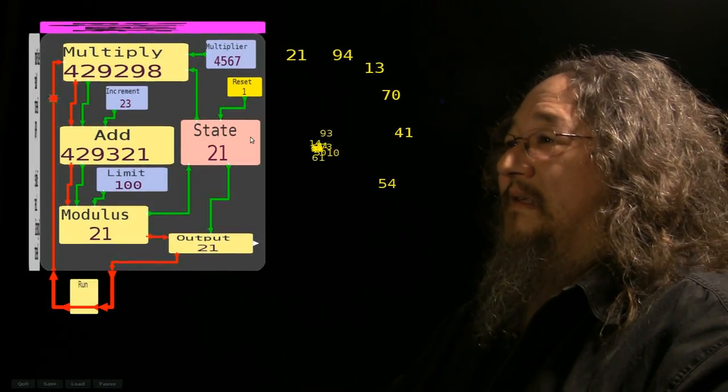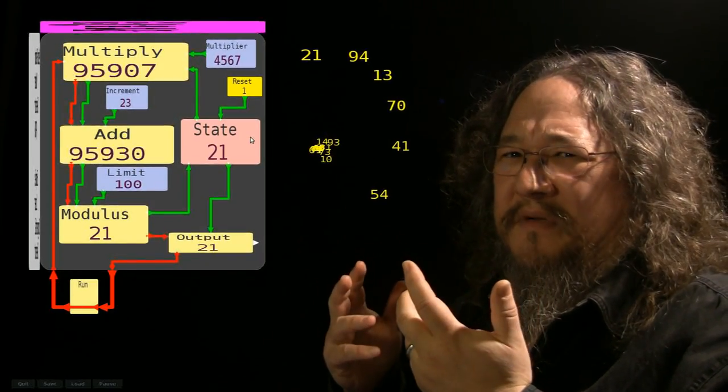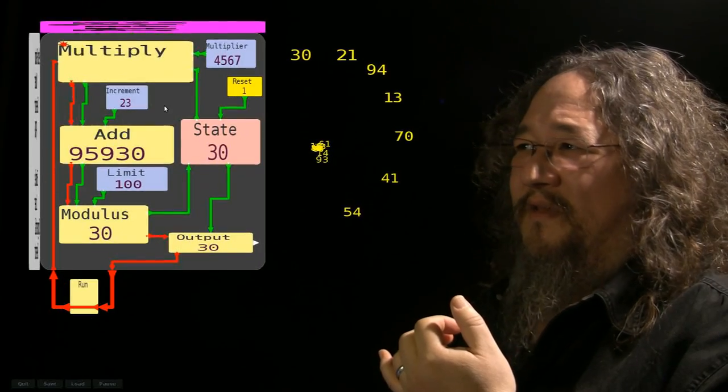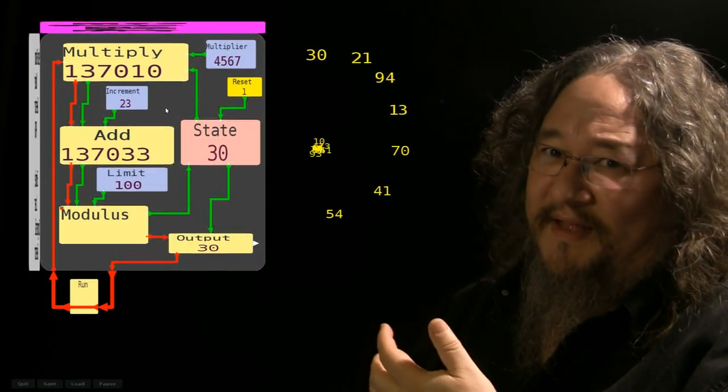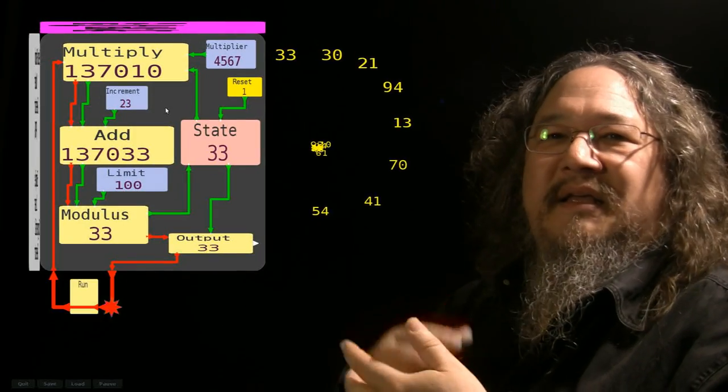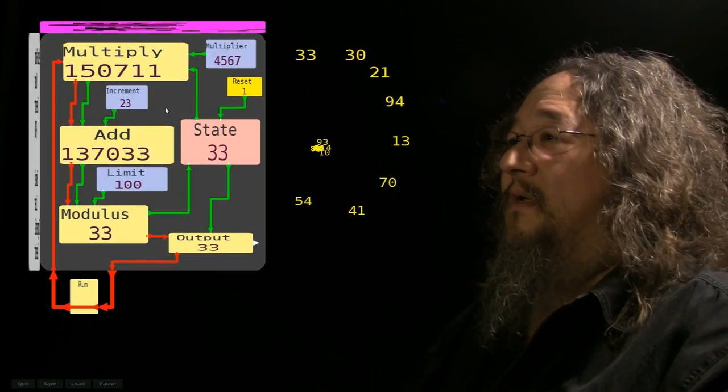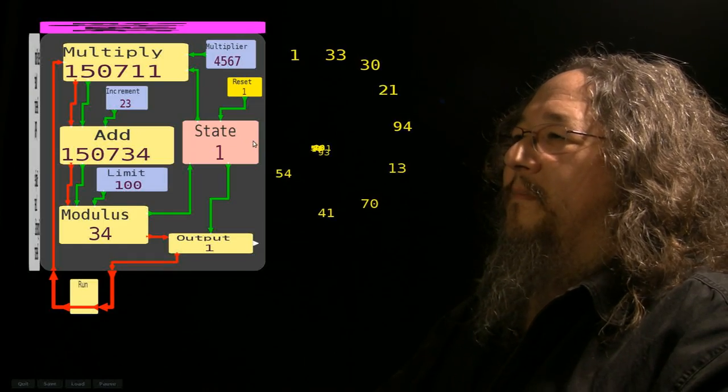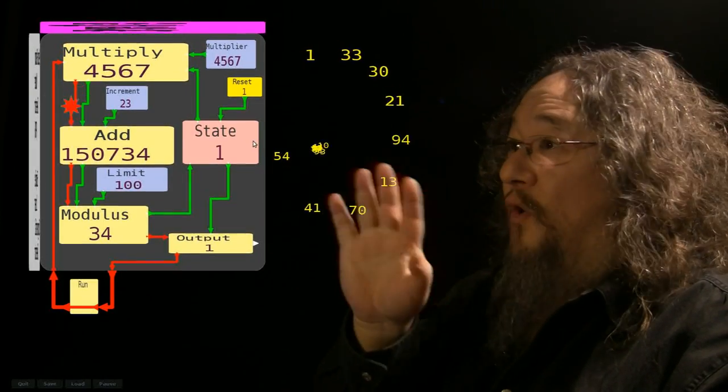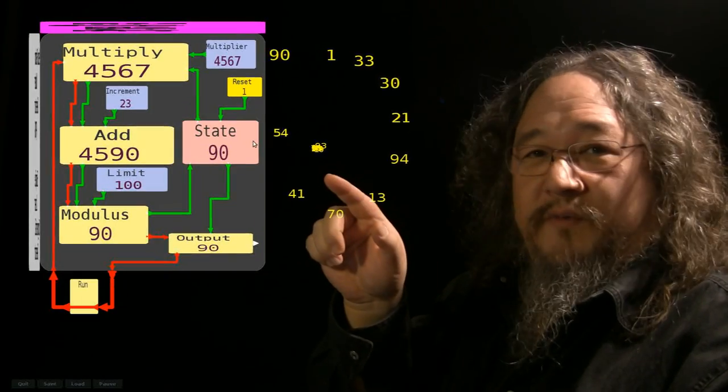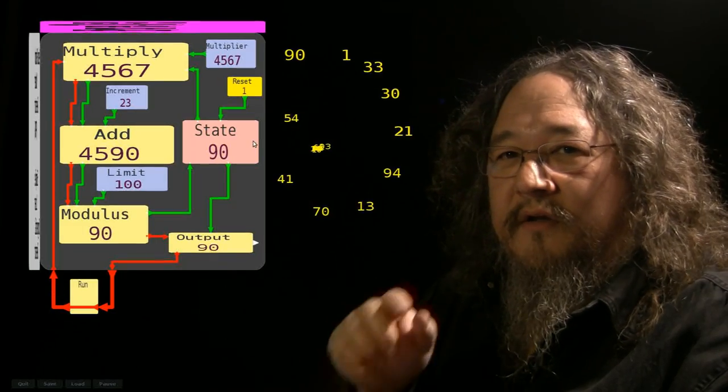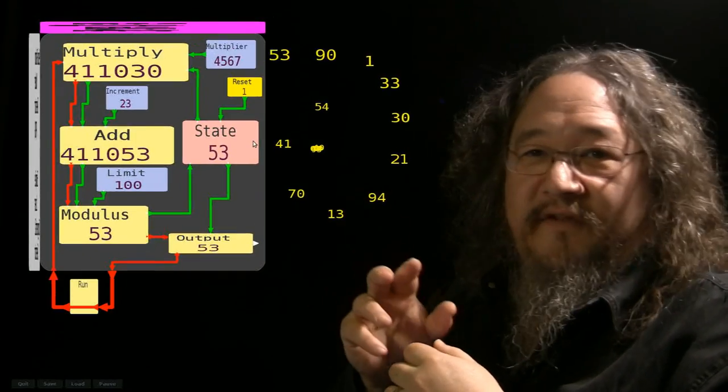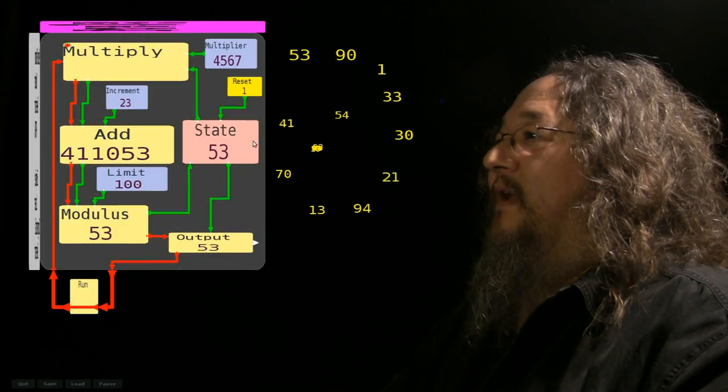And as a result, we get a sequence of numbers that changes over time. Although in this case, it's not a very random sequence of numbers. Number one, it alternates between even and odd. If we had different multipliers and increments, we could get that to be different. And in fact, it loops. It has a period. No matter where it starts, we can put it back at the beginning. That's what this reset button does.